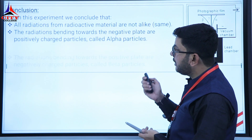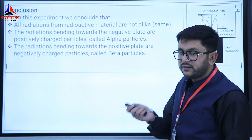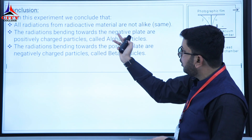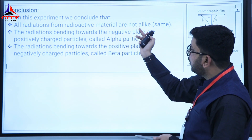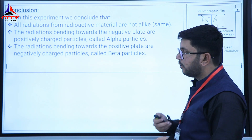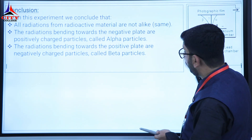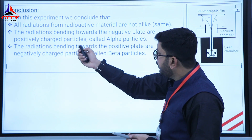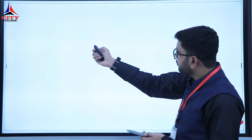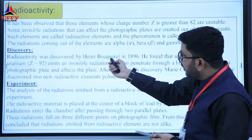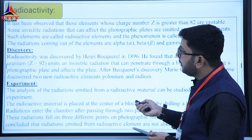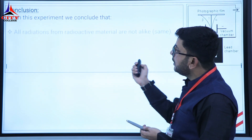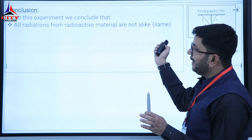From the conclusions of this experiment, we learned that all radiations from radioactive materials are not the same — if they were the same, they would hit a single point on the photographic plate. The radiations emitted are not alike.